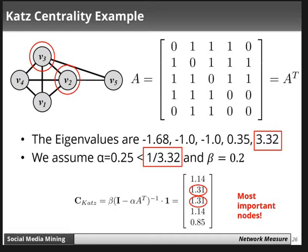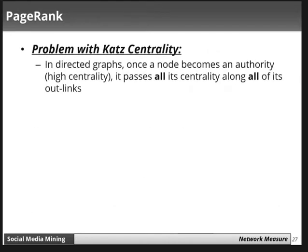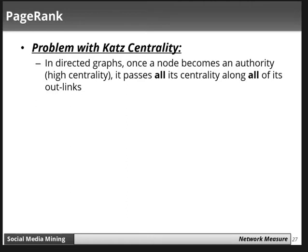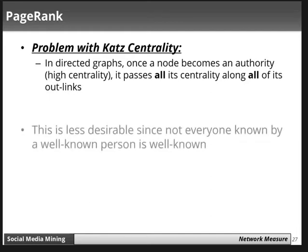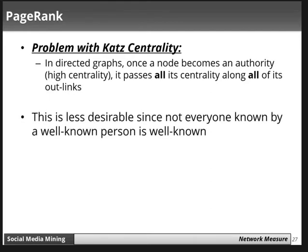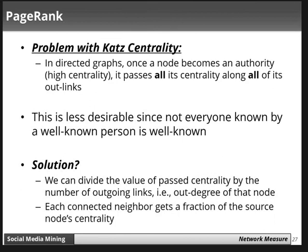There is a problem with Katz centrality in directed graphs. Once a node becomes an authority — meaning it has high centrality — it passes all its centrality along all its outgoing links to neighbors. This is less desirable since not everyone known by a well-known person is necessarily well-known themselves.